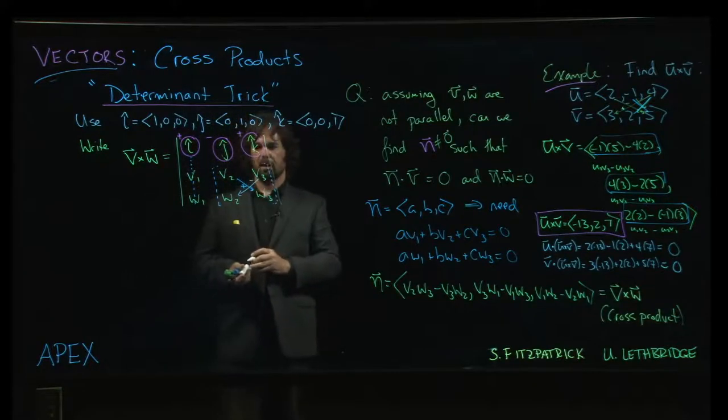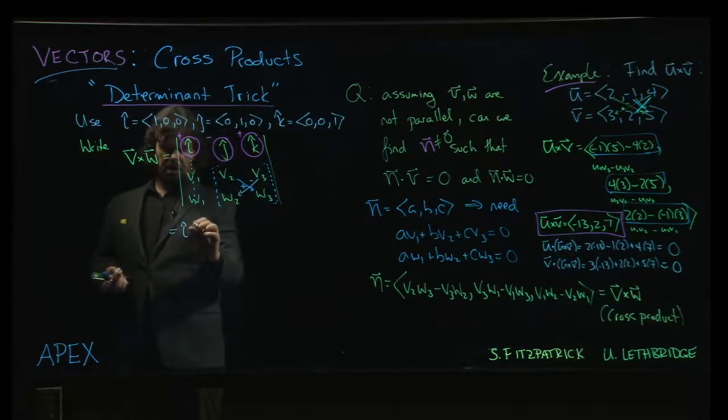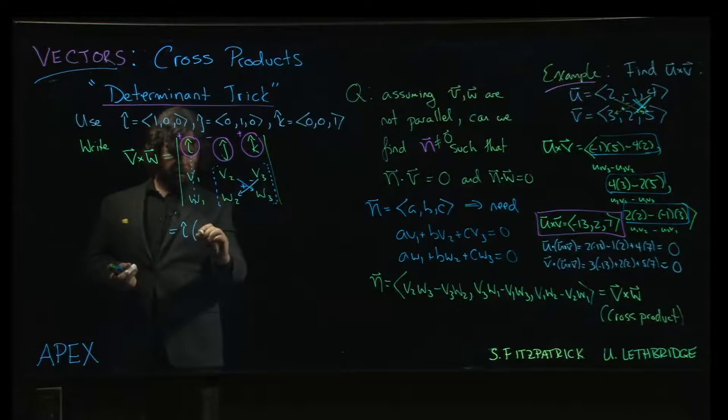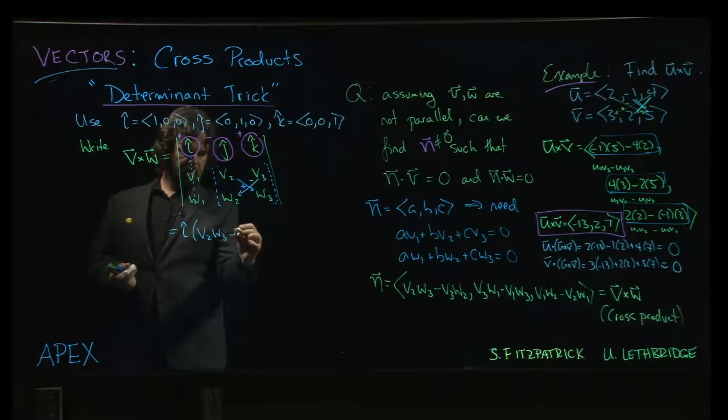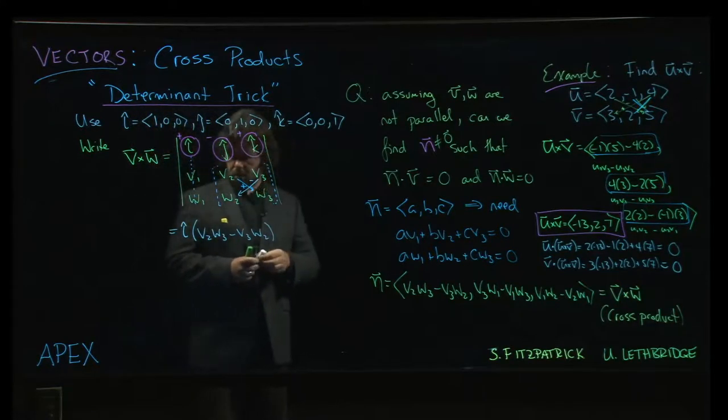So what that ends up looking like is: we have this i unit vector, so we write down the unit vector and then we write down this product v2·w3 minus v3·w2.